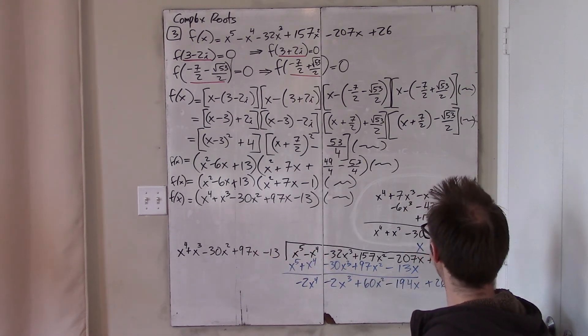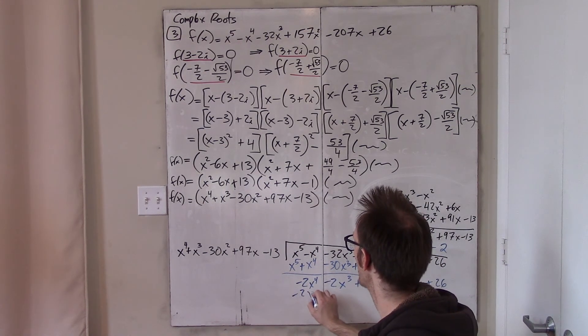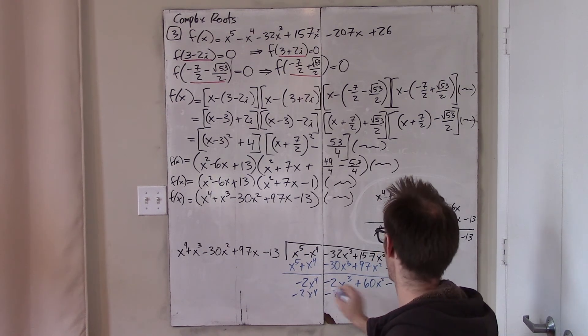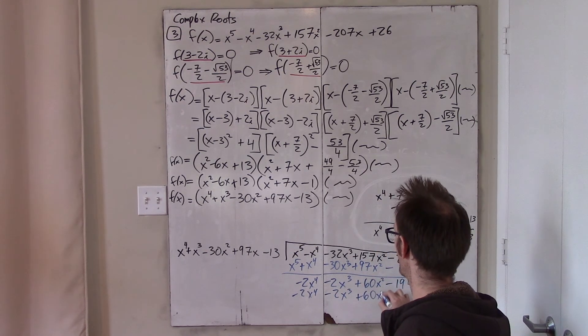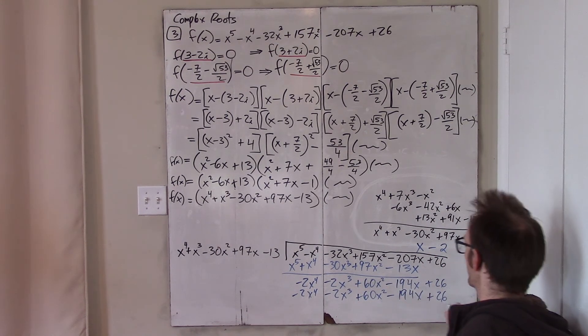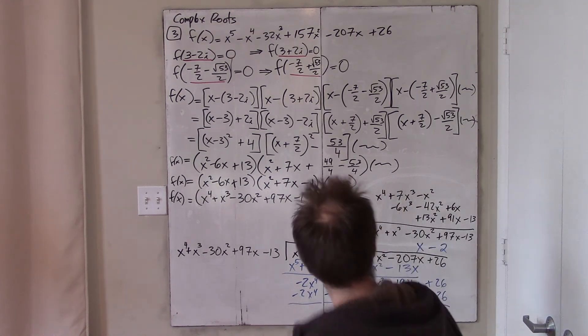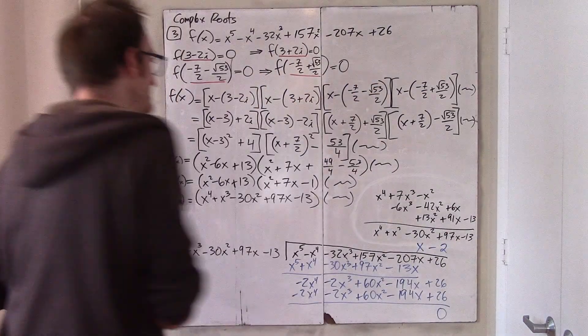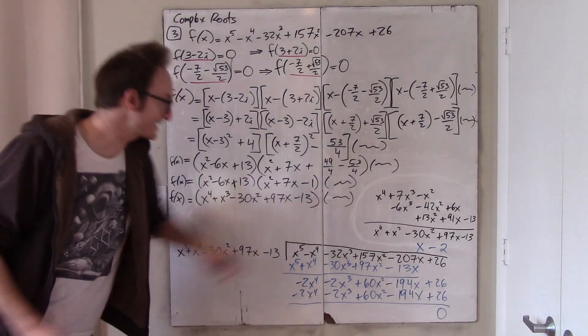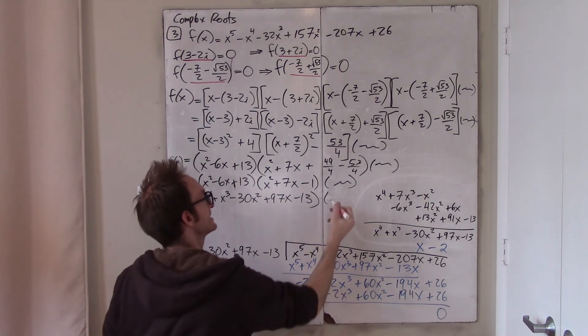Finally, how many times does that go in? Minus 2 times. Okay. So, this better all work out now. Negative 2x to the fourth minus 2x cubed, plus 60x squared. And that is indeed minus 194x and plus 26. Okay. So, I did make one small algebra mistake. I caught it. But it does go in evenly. And the final result of all of this work is that this little excess thingy that I didn't know what it was, I now know that it is x minus 2.